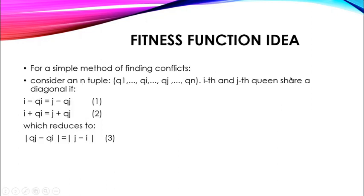This function is really important for the genetic algorithm because here we find the queen conflicts and the fitness value. The fitness value is important because we choose solutions from the population according to their fitness values. For finding conflicts, consider an n-tuple going from q1 to qn. The ith and jth queens share a diagonal if i minus qi equals j minus qj, or i plus qi equals j plus qj, where N equals the tuple length.